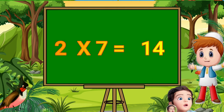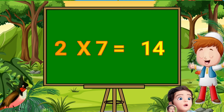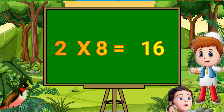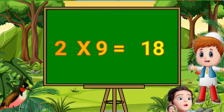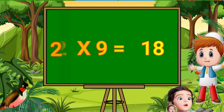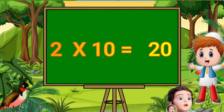Two sevens are fourteen. Two sevens are fourteen. Two eights are sixteen. Two eights are sixteen. Two nines are eighteen. Two nines are eighteen. Two tens are twenty.